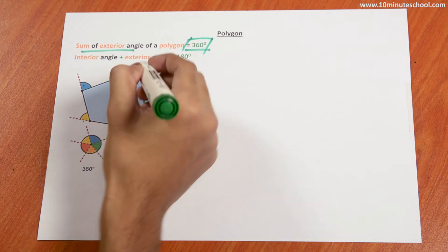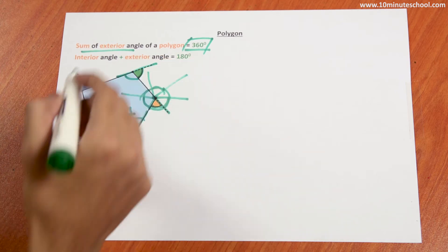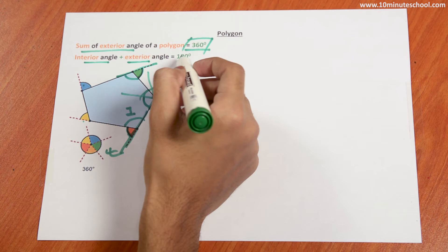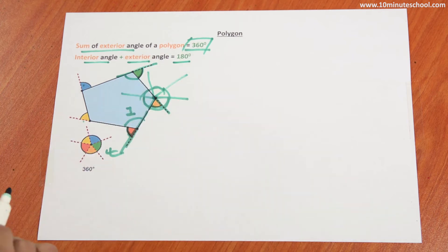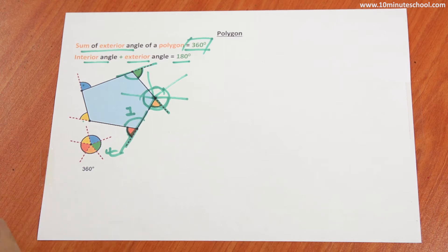The exterior and the interior together form a straight line, so the interior and the exterior angle will add up to 180 degrees. This information will give you two types of math problems.